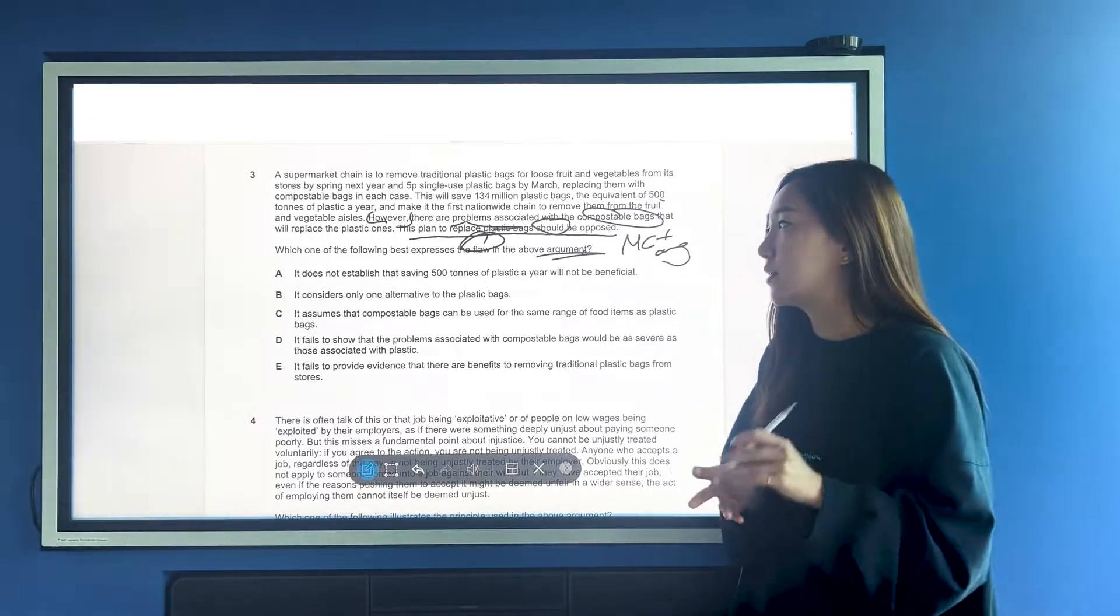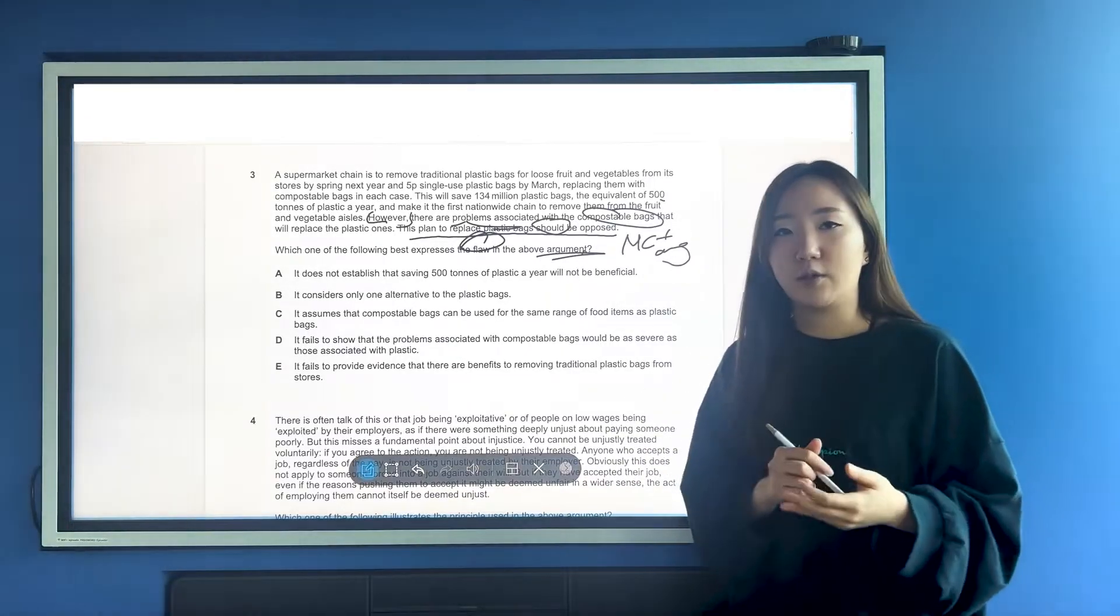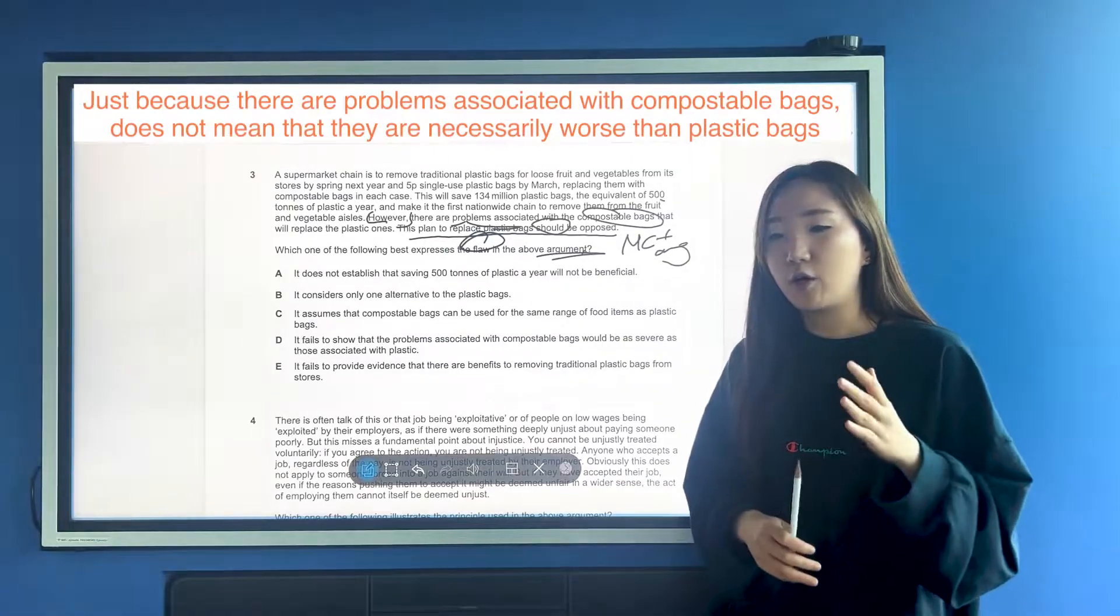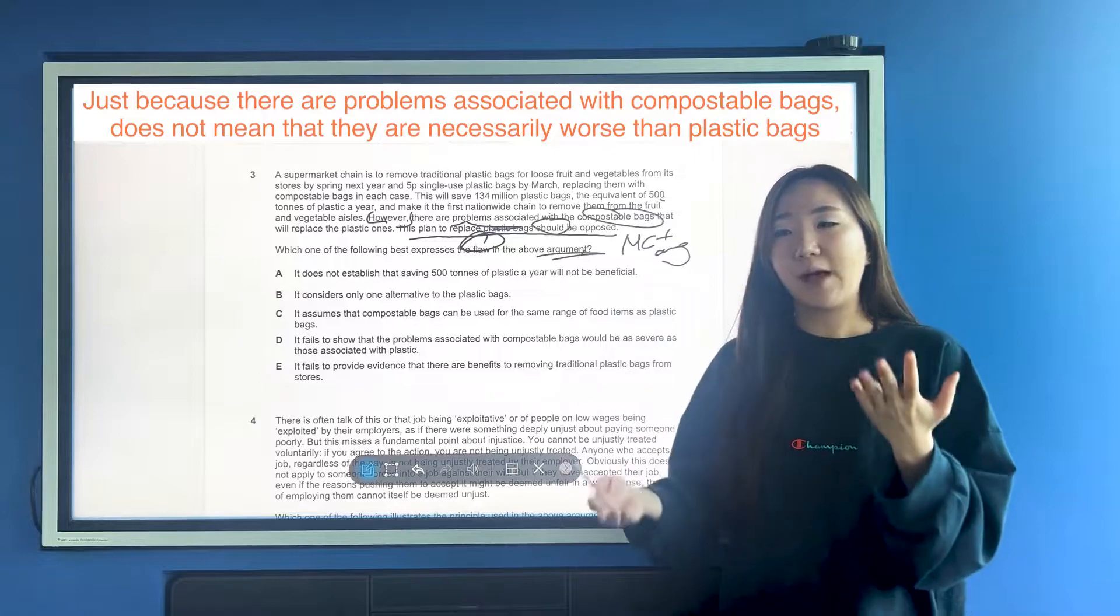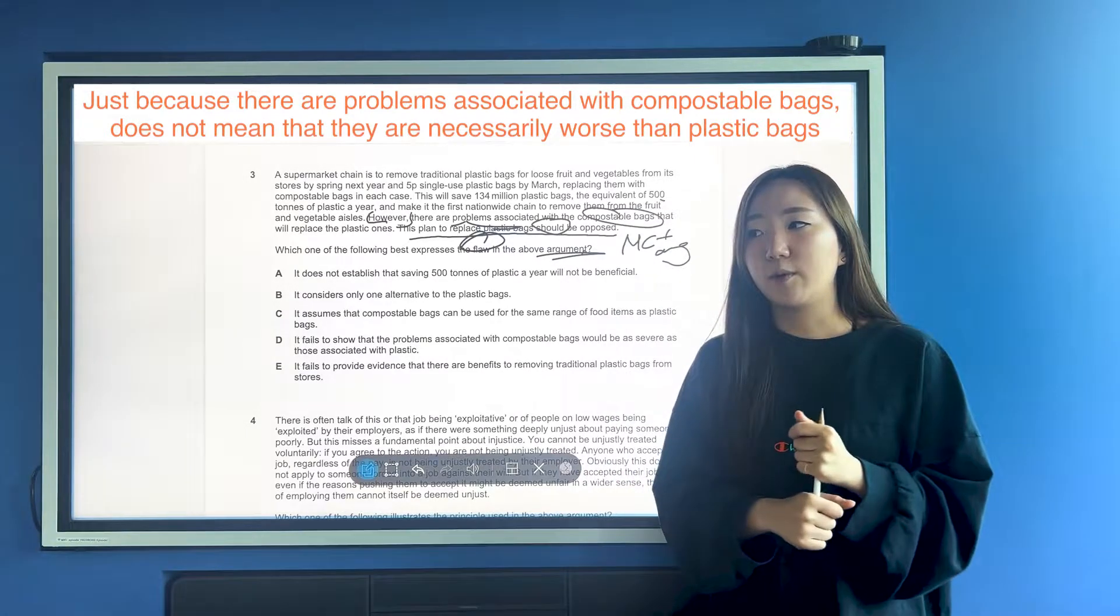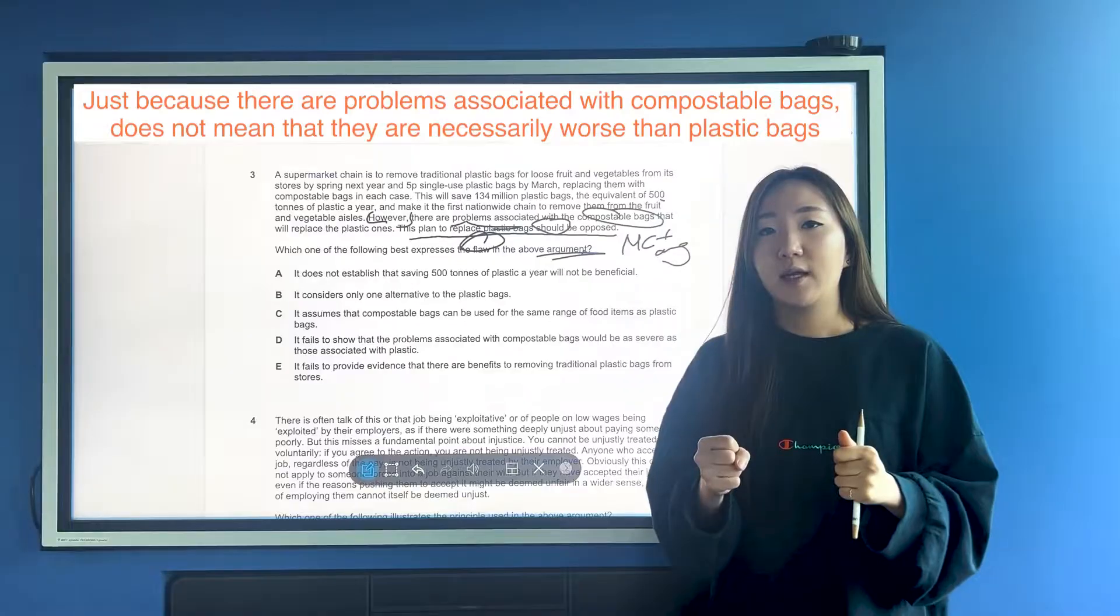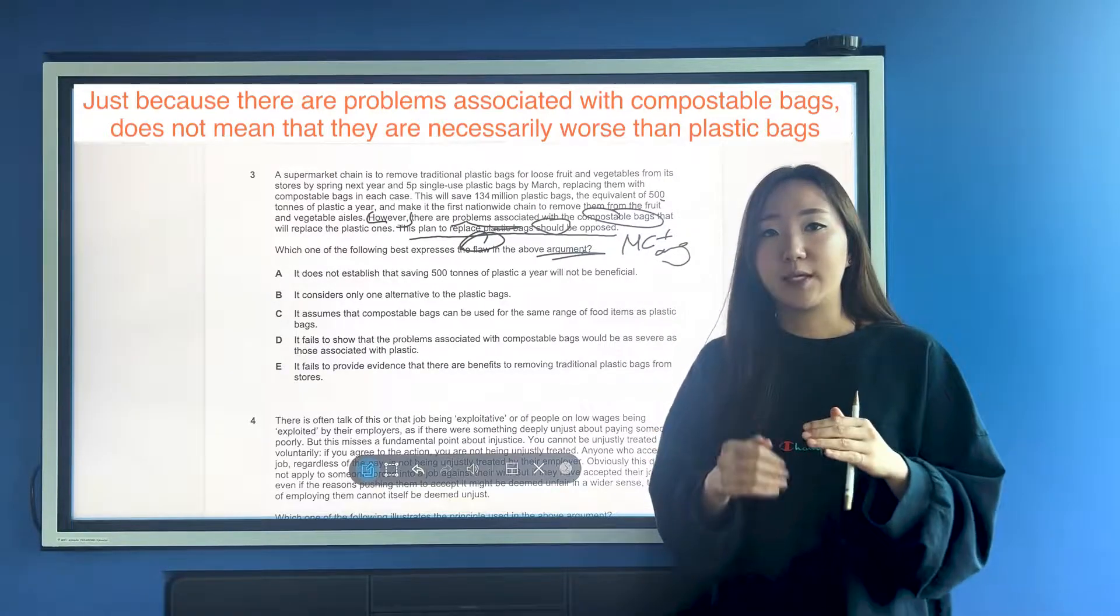I hope that this is clear to you that this is that argument that we had before. If they haven't considered both sides, basically, you can't by arguing that there's a problem with A, say that B is therefore the answer. So it hasn't balanced it enough. The flaw would be that the argument has not considered which one would be worse, basically.